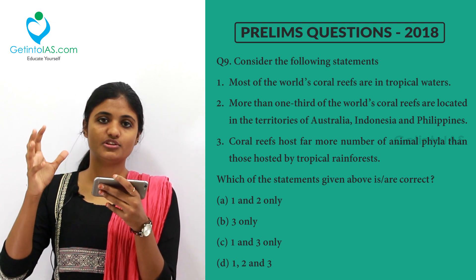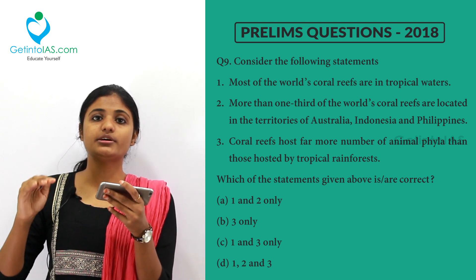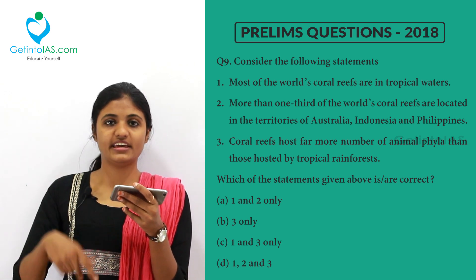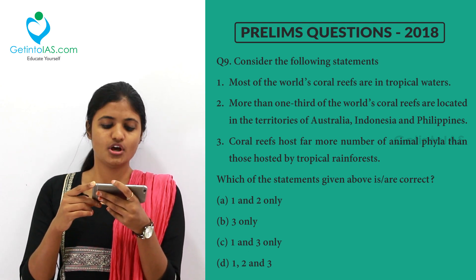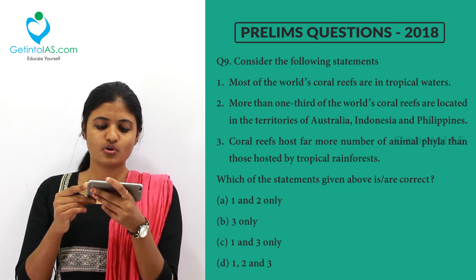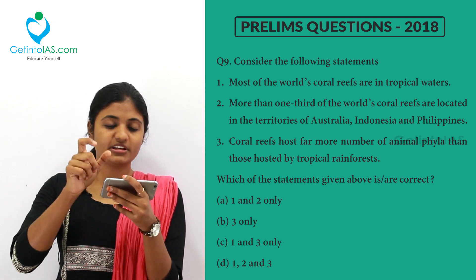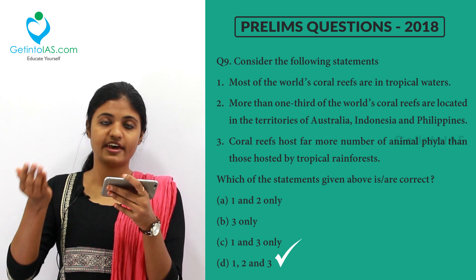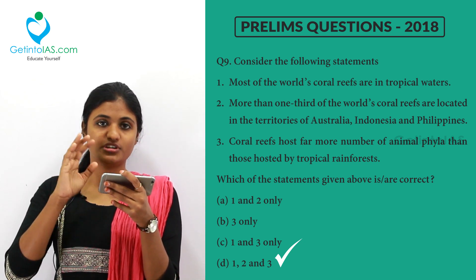Coral reefs are of shallow and deep water types. The shallow type contains chlorophyll, but deep water corals do not contain chlorophyll and hence stay in cold water. The second option is correct. The third statement says coral reefs host far more number of animal phyla than those hosted by tropical rainforests — and yes, when you compare the two, coral reefs contain more animal phyla than tropical rainforests. So all three options are correct and D is the correct answer.